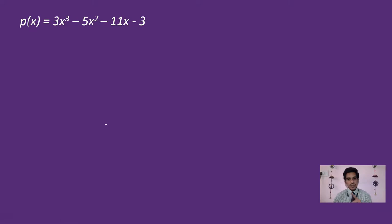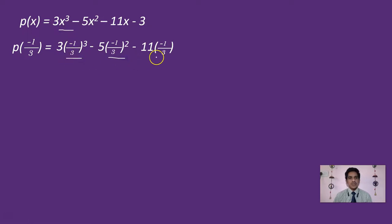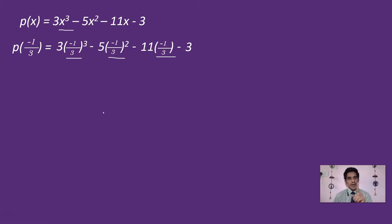The third zero is a fraction: -1/3. We have to find P(-1/3). Substituting x = -1/3: 3x³ becomes 3 of (-1/3)³, minus 5x² becomes -5 of (-1/3)², minus 11x becomes -11 of (-1/3), and the constant is -3. Now, (-1/3)³ = -1/27, so the first term becomes 3 × (-1/27).